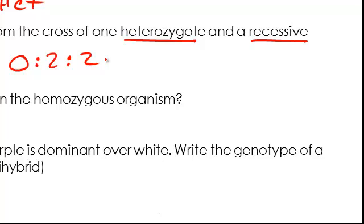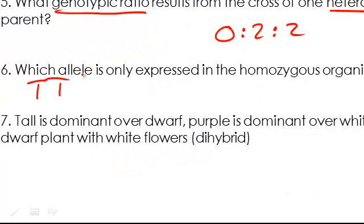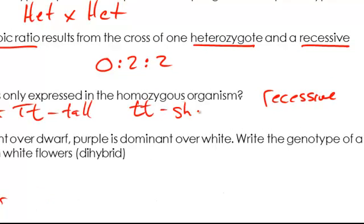Number six, which allele is only expressed in the homozygous organism? That's recessive. If we think about one of the examples we used earlier in this unit was tall versus short, tall dominant to short. You can have a tall organism that would be big T big T, or big T little t, and that would give you tall. And then if you have little t little t, that would give you short. So which allele is only expressed in the homozygous organism? Here you can see the recessive allele, but it's not expressed to end up with the tall plant. Here you can see the recessive alleles are expressed as short, but it's only when it's homozygous recessive.